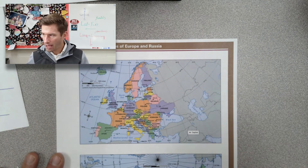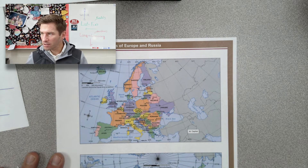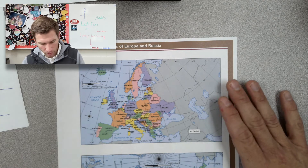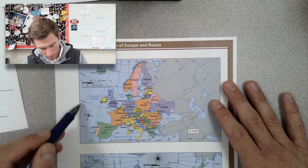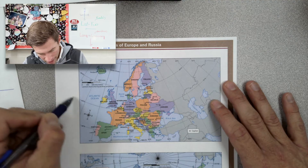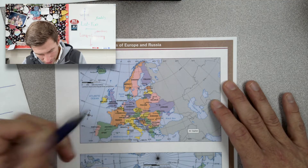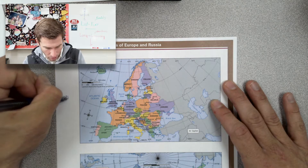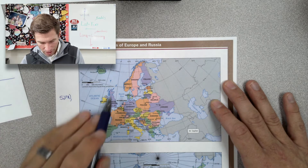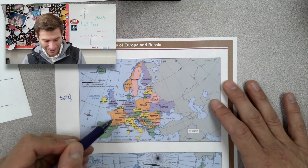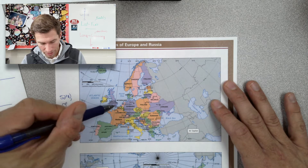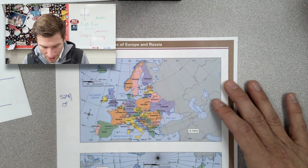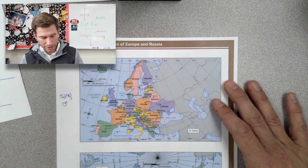Let's look at a couple more curved map examples using Europe. To find the absolute location of London: here's 40, here's 50, here's 60 — London is just above 50, so we call it about 52 degrees north. For longitude, the prime meridian runs almost directly through London, so we call it roughly zero degrees — even though it's just a little to the west, we'll call it zero.